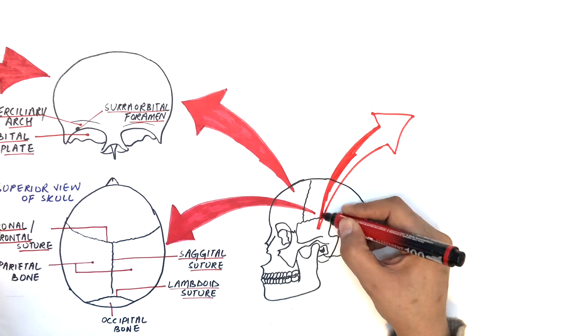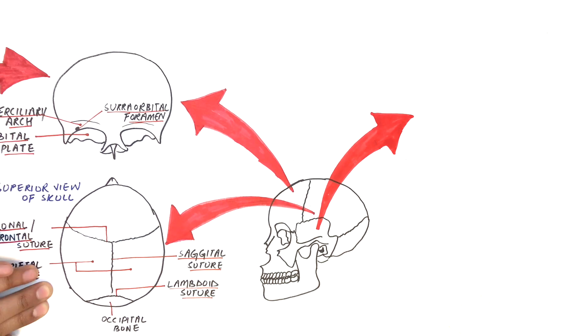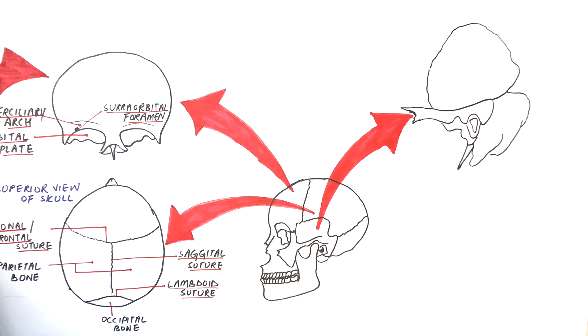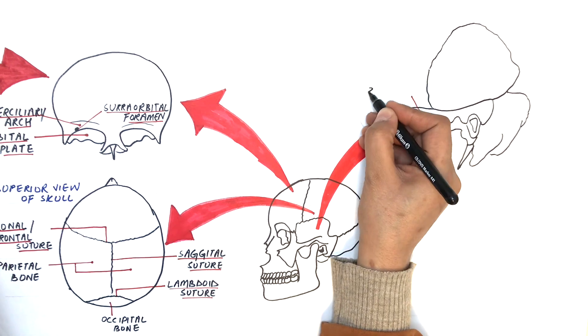The third bone we have are the paired temporal bones. These bones make our temples, the sides of our head which we massage while having a headache. The temporal bone has got so many features.